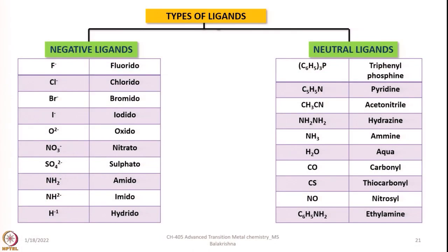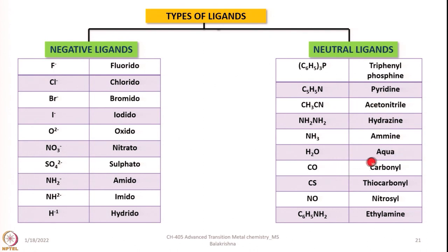Anionic ligands include fluoride, chloride, bromide, iodide, oxide, nitrato, sulfato, amido, imido, and hydrido. Neutral ligands include triphenylphosphine, pyridine, acetonitrile, hydrogen, amine, ammonia (also called amine), water (called aqua), carbonyl (CO), and CS thiocarbonyl. CS does not have independent existence but can be generated from C₂ and used similarly to carbon monoxide, as well as nitrosyl and ethylamine.